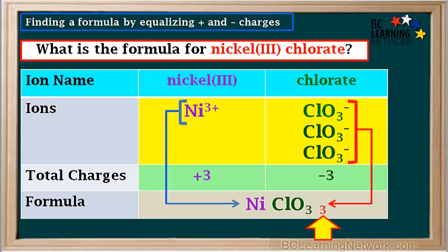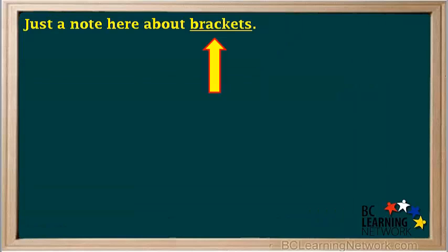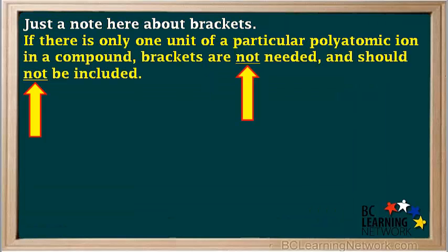We have one Ni ion and three ClO3 units. To show that ClO3 is a single unit and there are three of them, we add brackets around the ClO3, like this: Ni(ClO3)3. The subscript 3 on the polyatomic ion tells us that chlorate has three oxygen atoms, and the subscript 3 outside the brackets tells us there are three chlorate ions in the compound. Note: if there's only one unit of a particular polyatomic ion in a compound, brackets are not needed and should not be included — including unnecessary brackets will make the formula wrong.